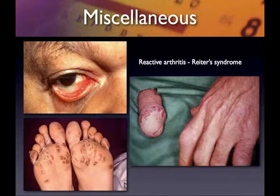Beyond the arthritis and urethritis, other lesions can be seen. On the genitalia, circinate balanitis is characteristic. On the feet, you see keratoderma blennorrhagicum. This particular case appears to represent an exceptionally severe presentation of reactive arthritis.